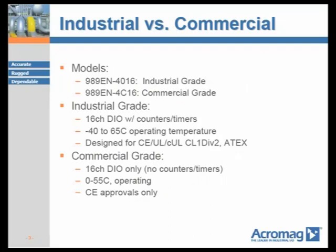The 989EN is offered in two basic models: industrial grade and commercial grade. Model number 989EN-4016 is an industrial grade discrete I/O device that includes 16 channels of discrete I/O that can be used in any configuration of inputs and outputs. The I/O can also be used as configurable counters, timers, and alarms. It is designed for extended operating temperatures of minus 40 to 65 degrees Celsius, and is designed to meet CE, UL, CUL, Class I Division II hazardous locations, and ATEX Zone II approvals for European hazardous location requirements.